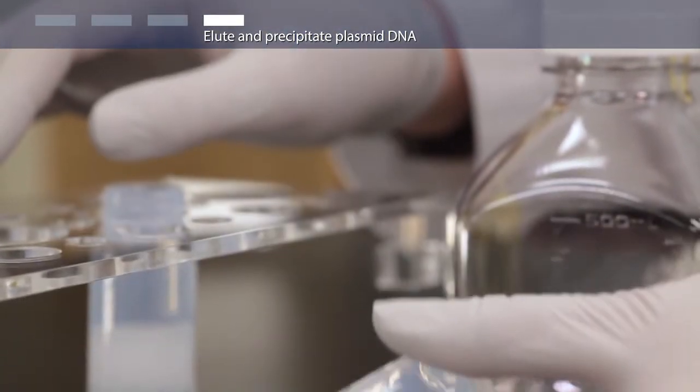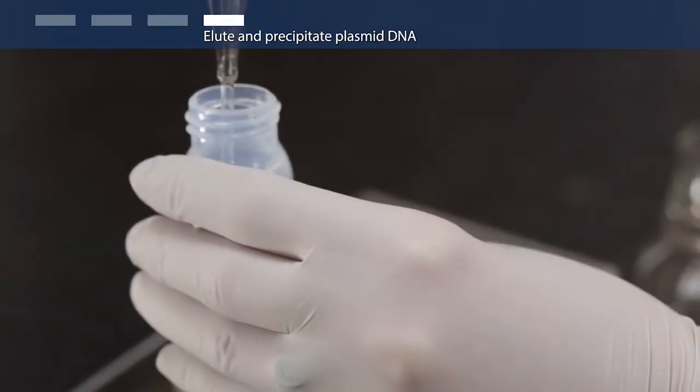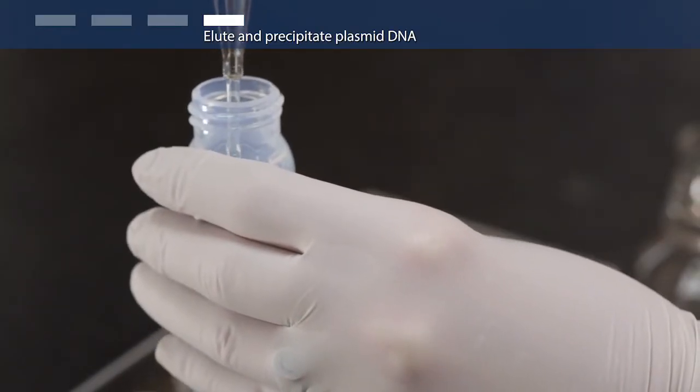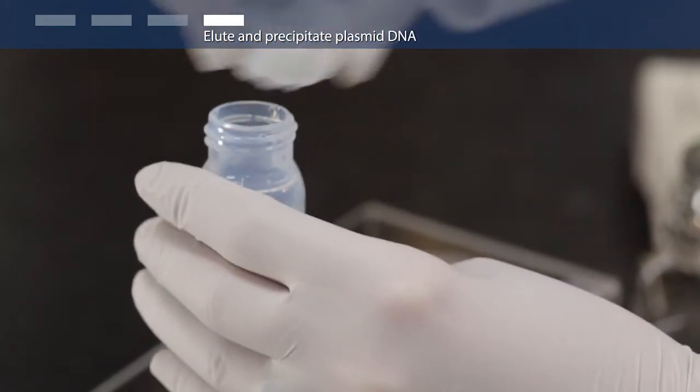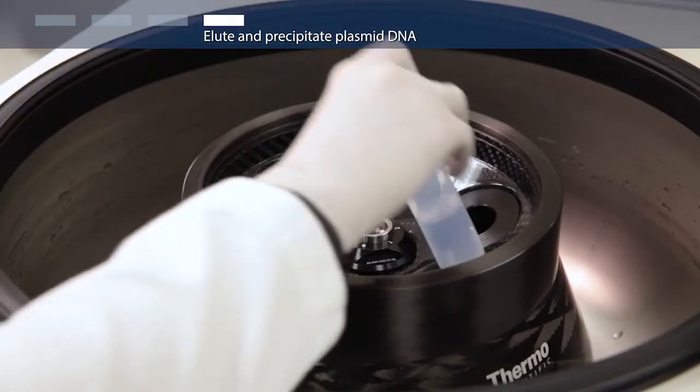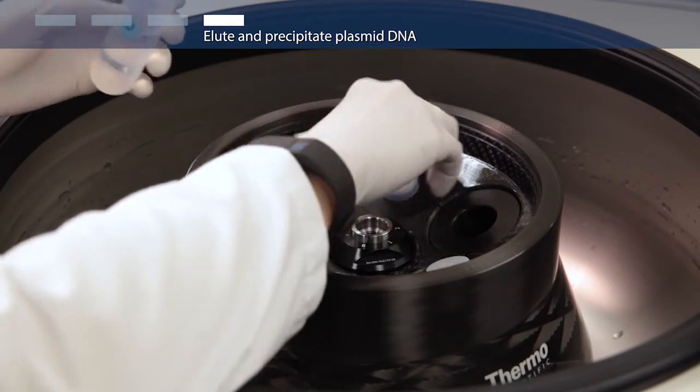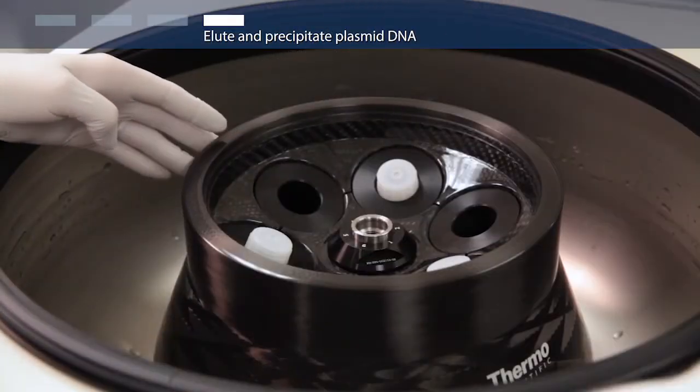Then discard the supernatant. Wash the plasmid DNA pellet in 20 milliliters 70% ethanol. Centrifuge at greater than 12,000 times G for 10 minutes at 4 degrees Celsius.